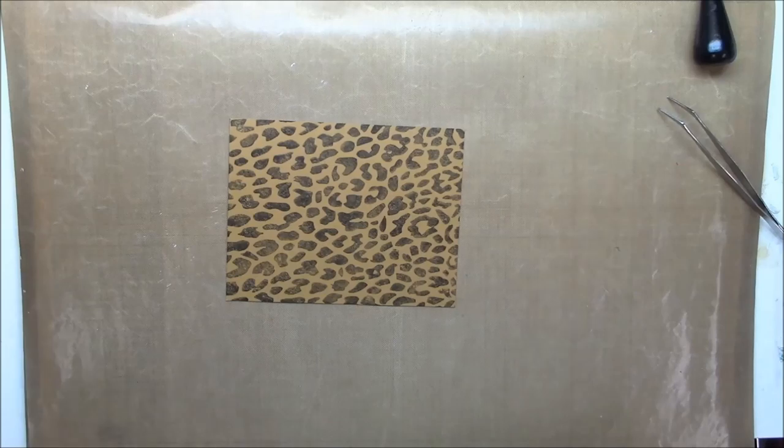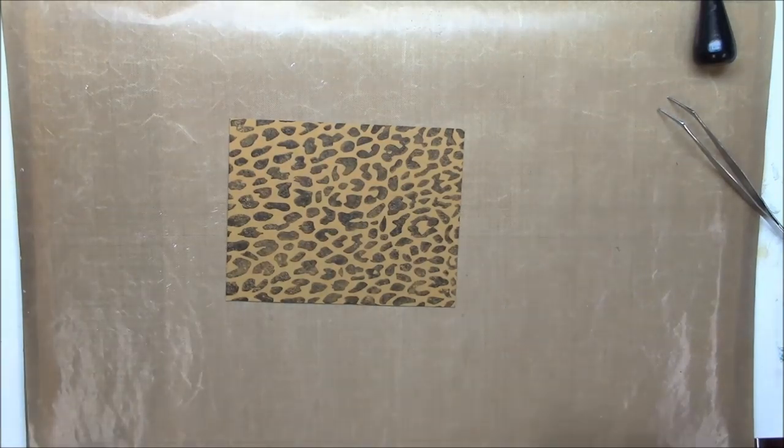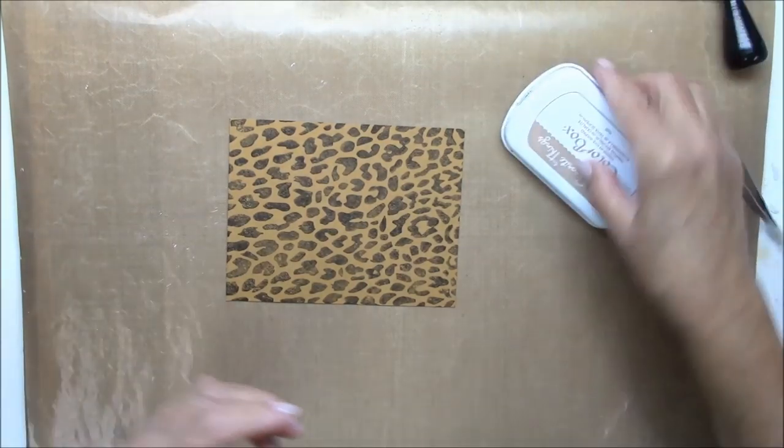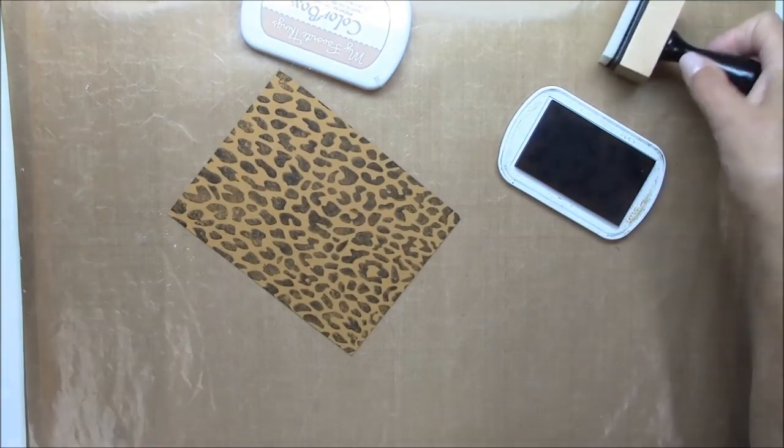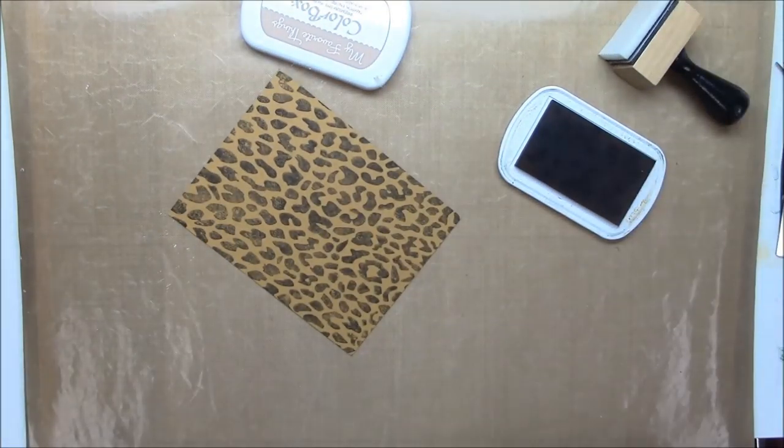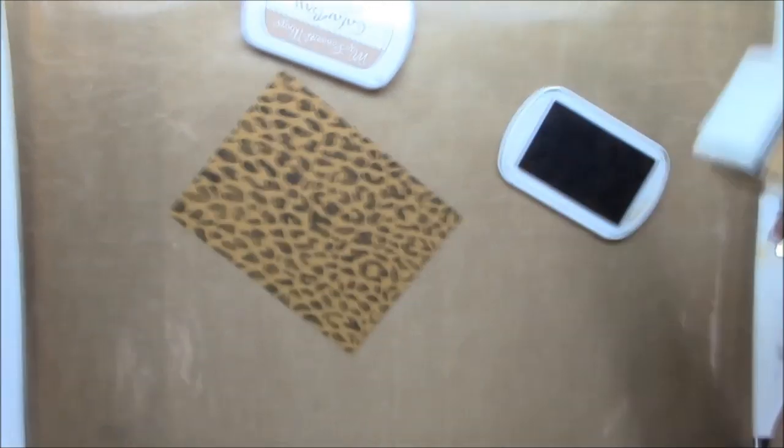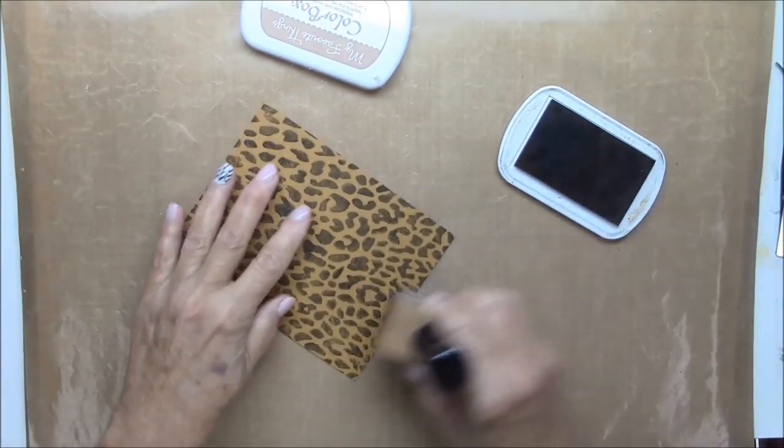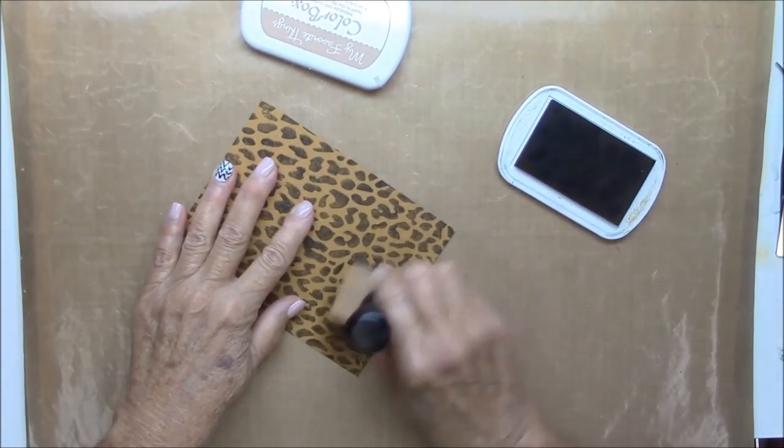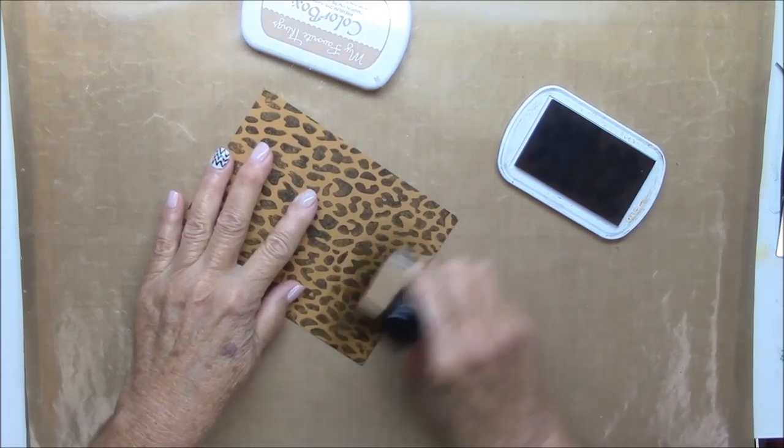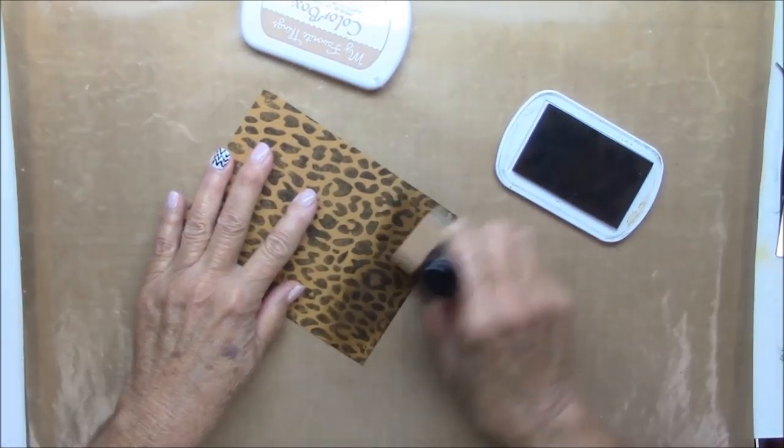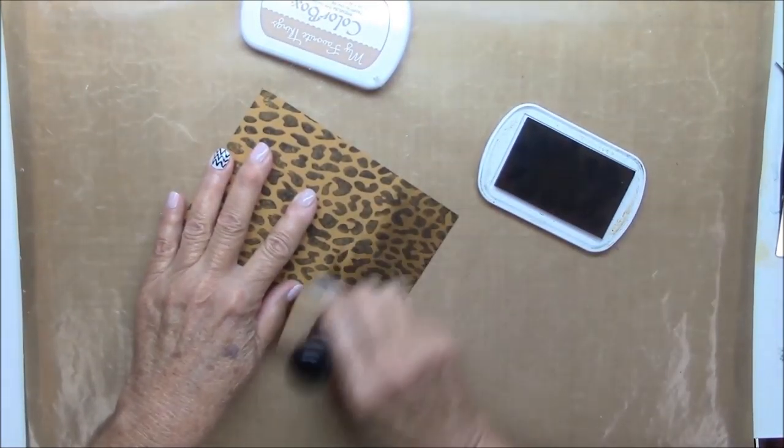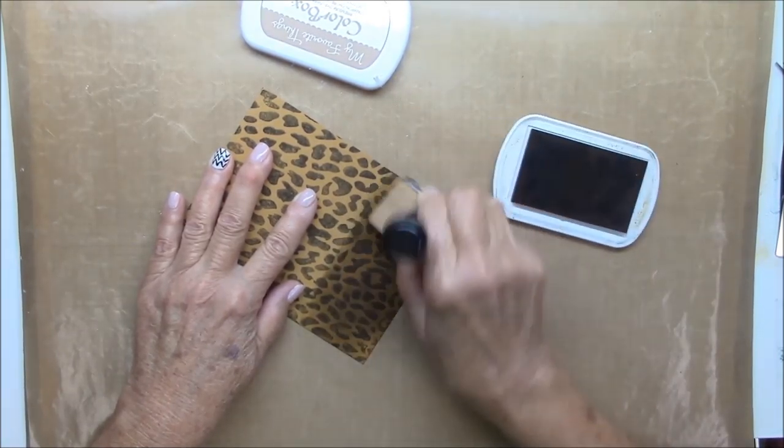Now I'm going to use my craft ink and my sponge applicator and I'm going to sponge pretty heavily across the bottom of this piece of pattern paper. I'm not going to do the whole thing because I might want to use the unsponged part for something else later on so I'm just going to sponge enough so that I can cut out the glasses dynamics.